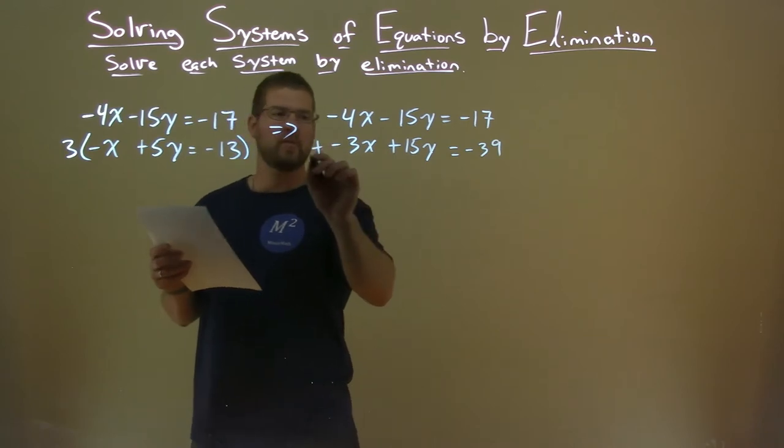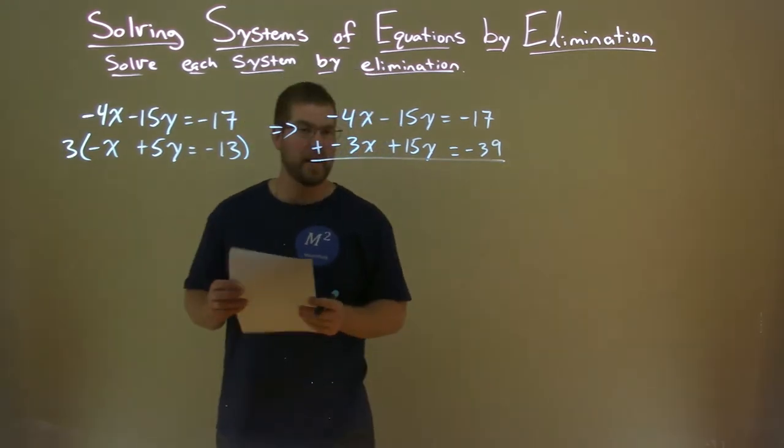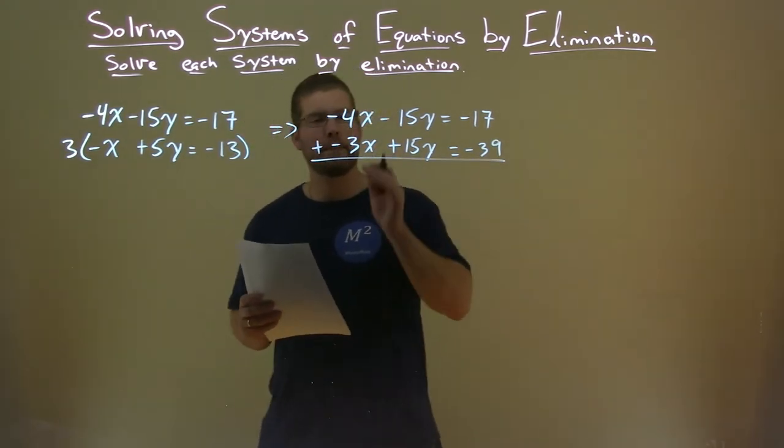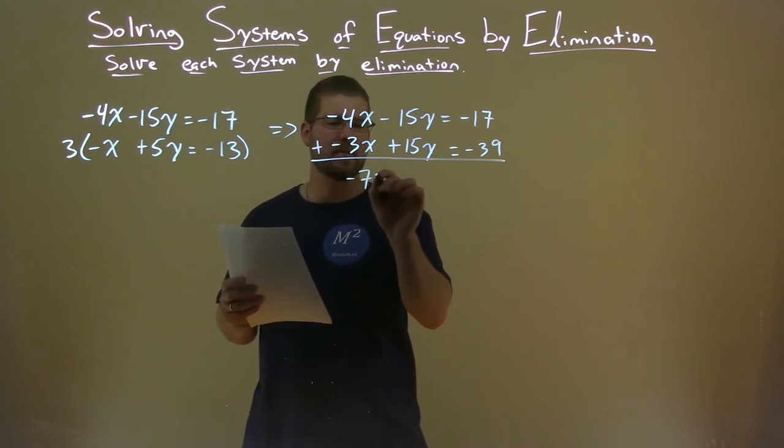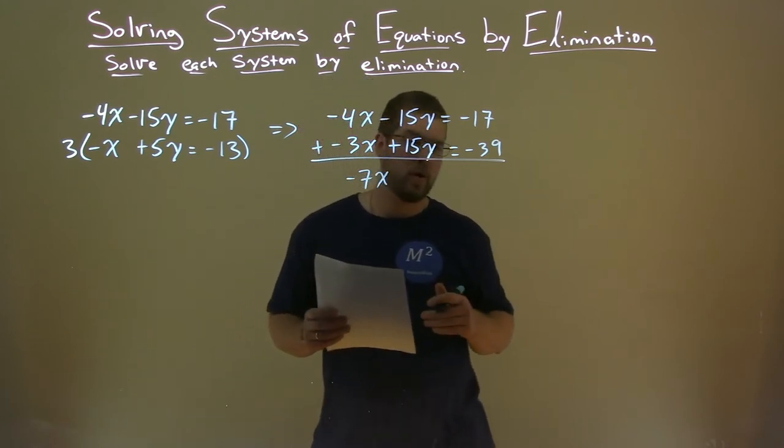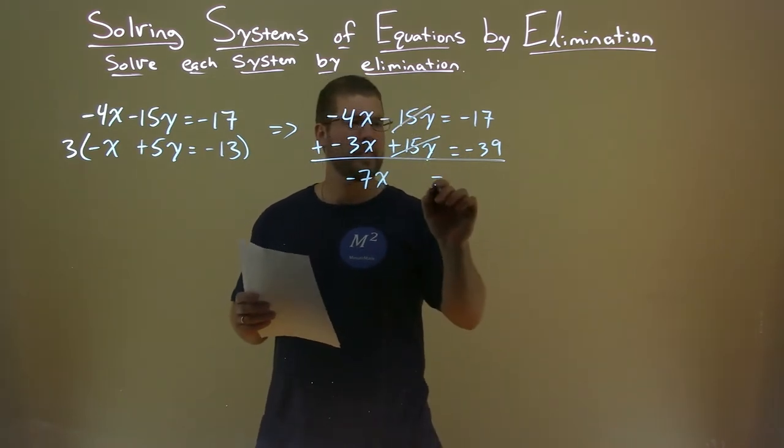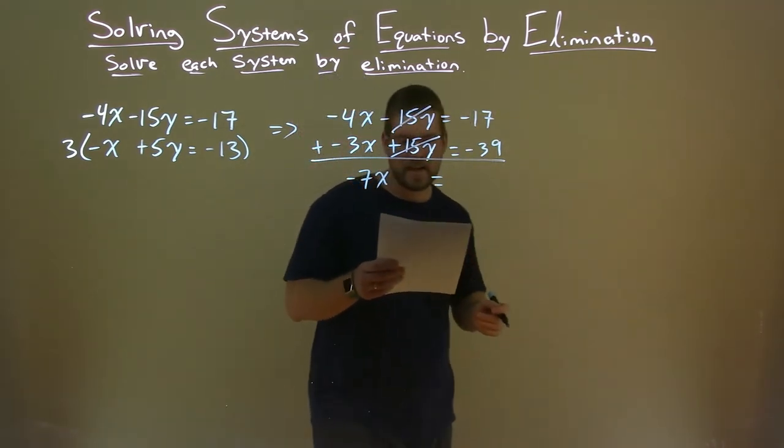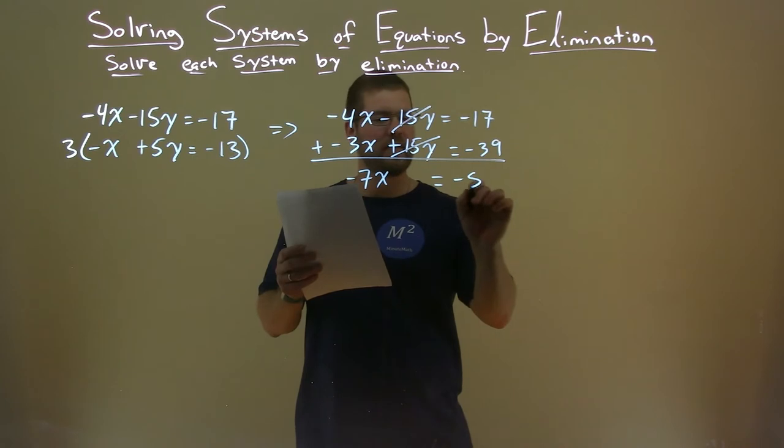Alright, we add our two equations together and see what happens. Negative 4x plus negative 3x is negative 7x here. Negative 15y plus positive 15y is 0y. Negative 17 plus negative 39 is negative 56.